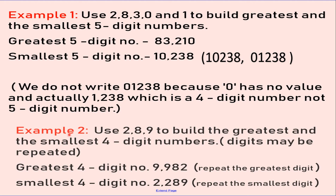Let us see the second example. Use 2, 8, 9 to build the greatest and the smallest 4-digit numbers. Digits may be repeated. Only 3 digits are given and we need to make a 4-digit number, so we need to repeat a digit. To make the greatest number, we repeat the greatest digit, which is 9. So the greatest number is 9,982. To build the smallest 4-digit number, we repeat the smallest digit, which is 2. So the smallest number is 2,289. Was it easy, my children?